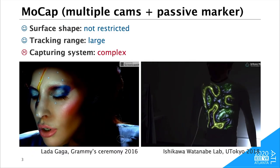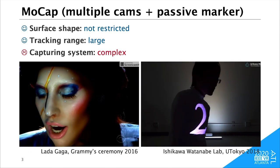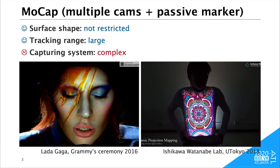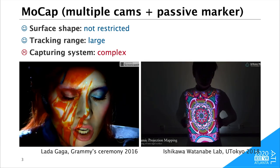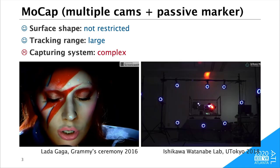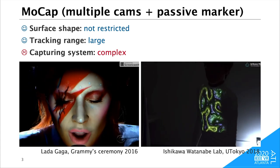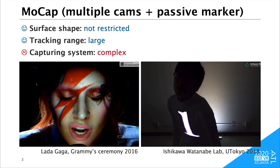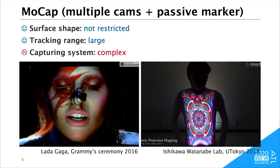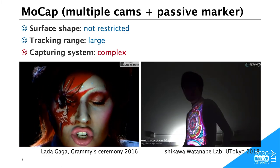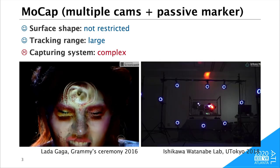Previously, motion capture systems were applied for dynamic projection mapping applications. Because multi-camera systems are robust for occlusion, the projection surface shape is not restricted. The measurement area can be large by increasing the number of cameras. On the other hand, the mocap system needs to synchronize multiple cameras, so the system becomes too complex to install in a daily environment.